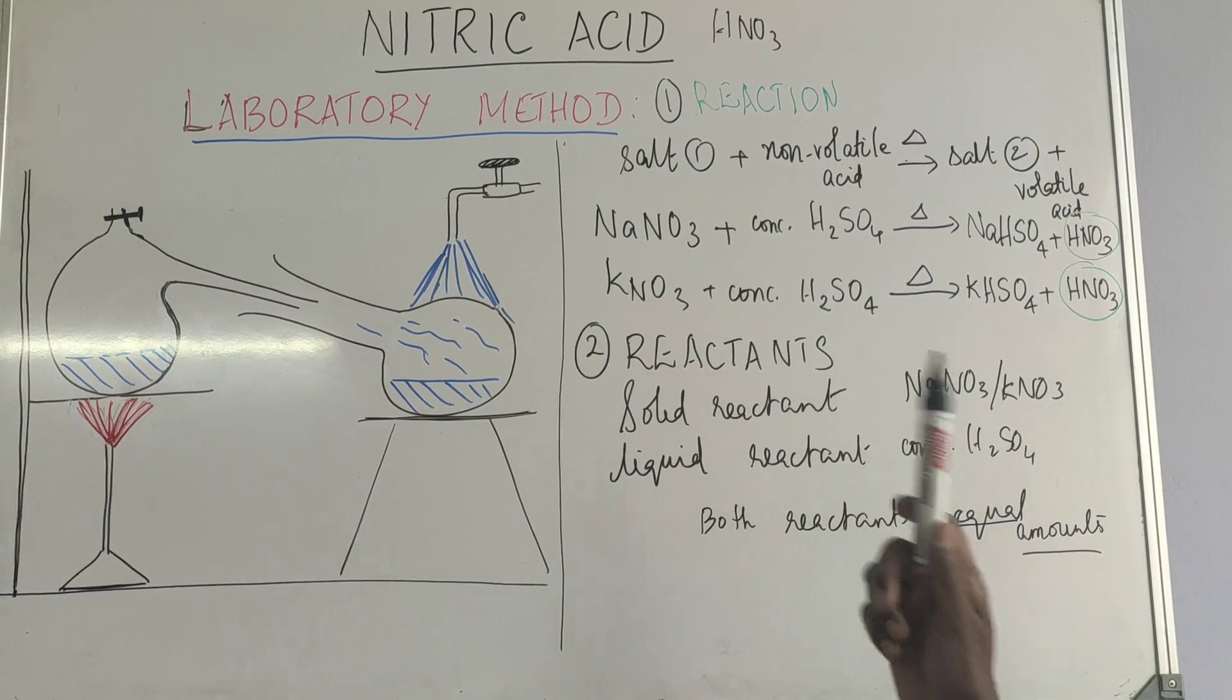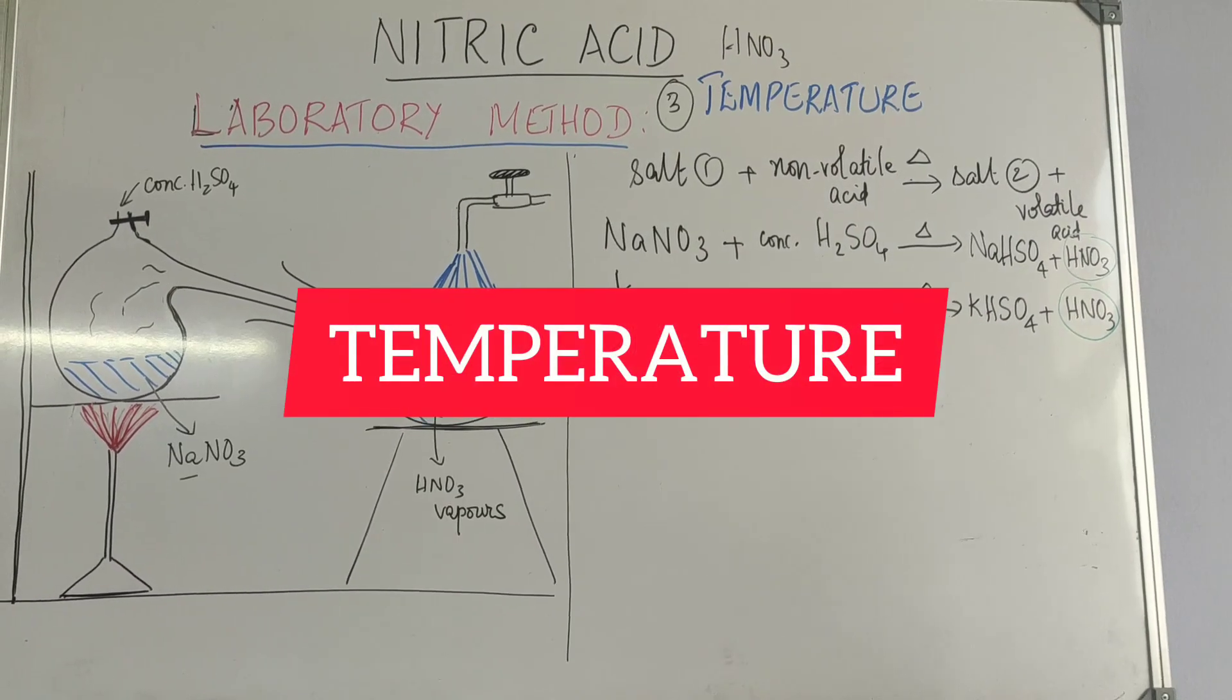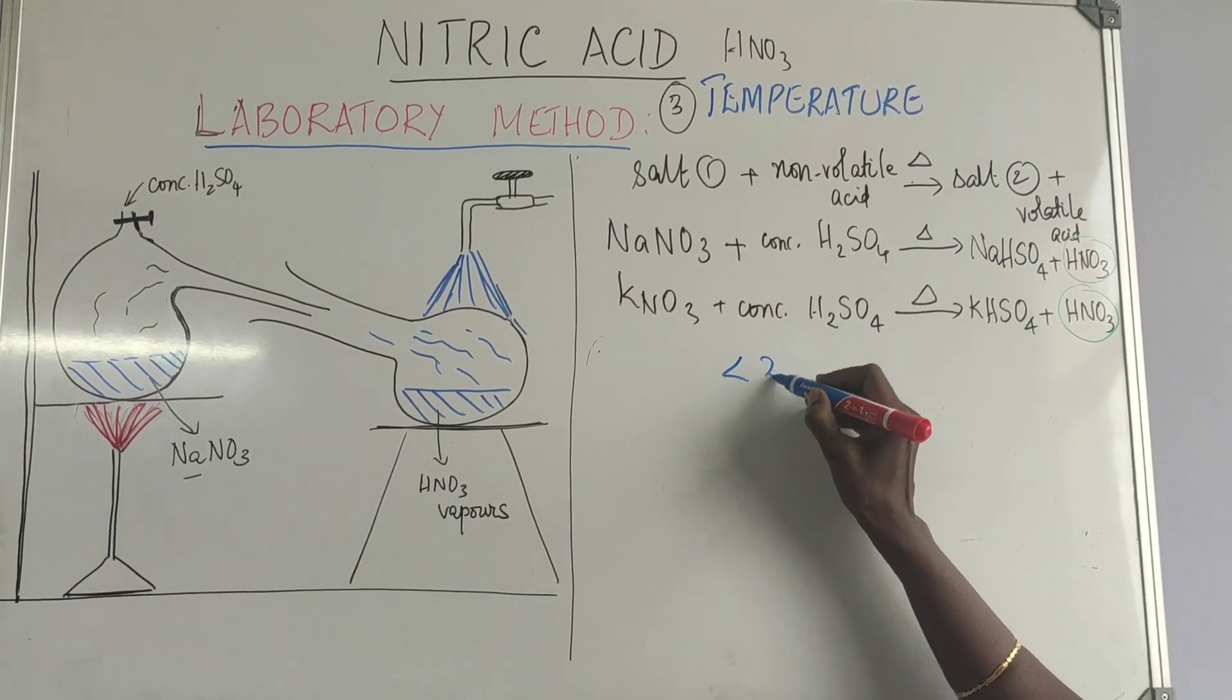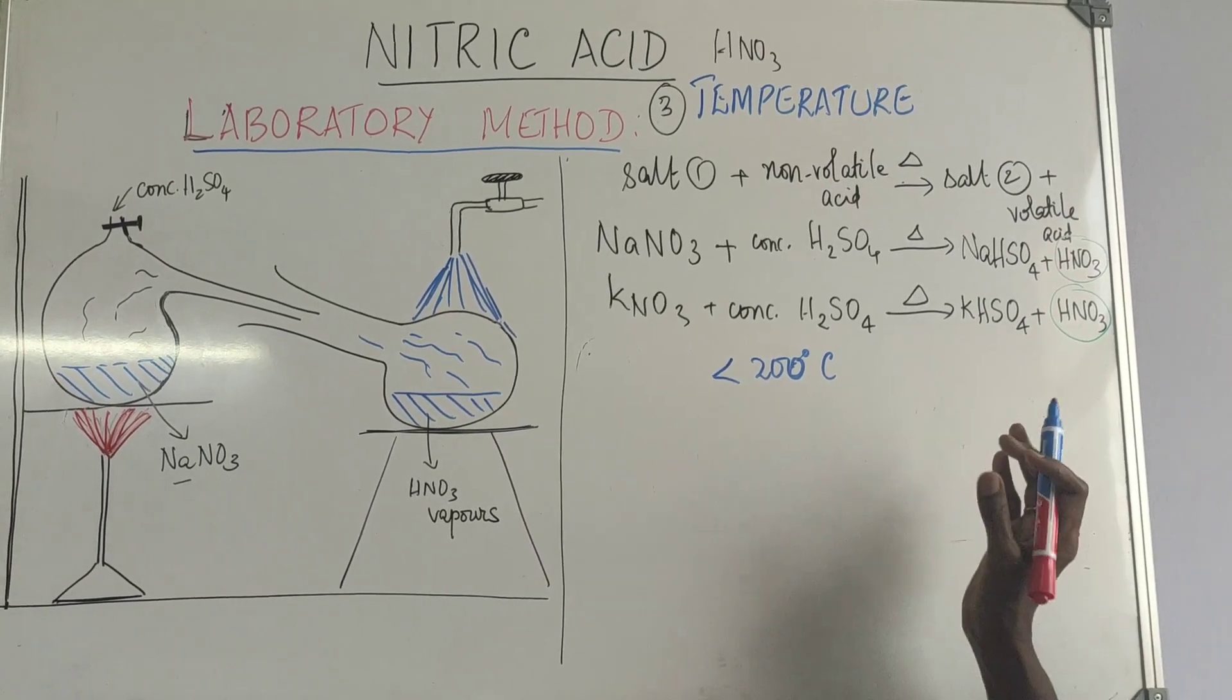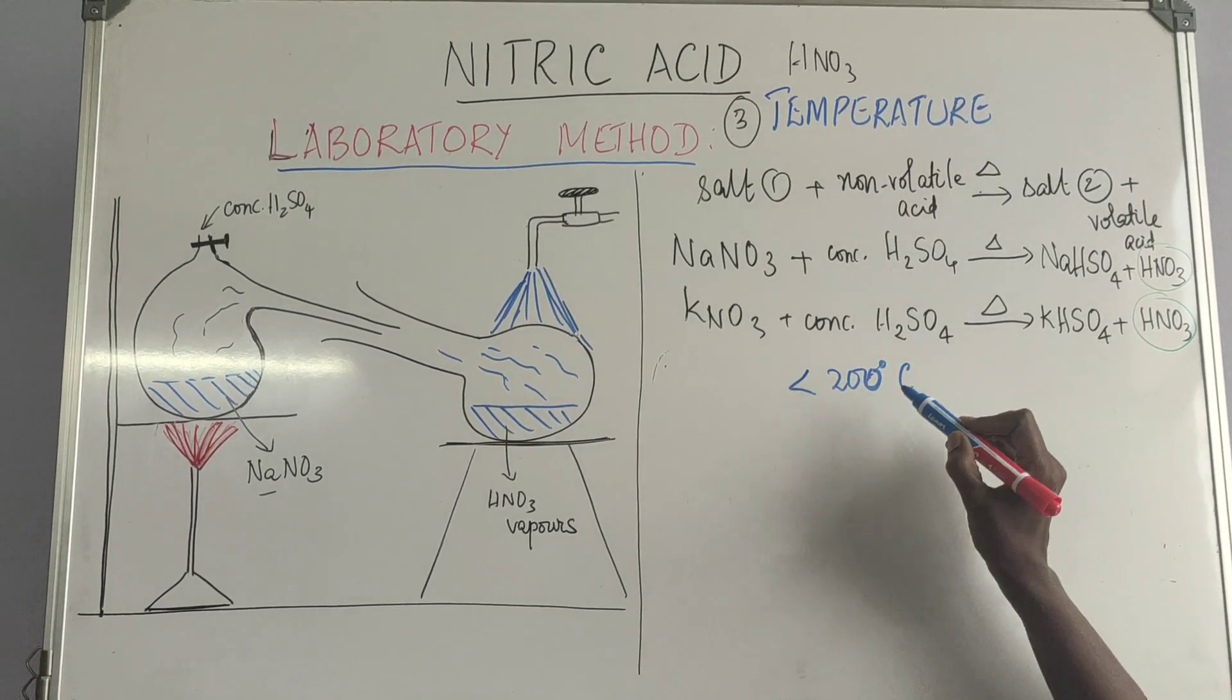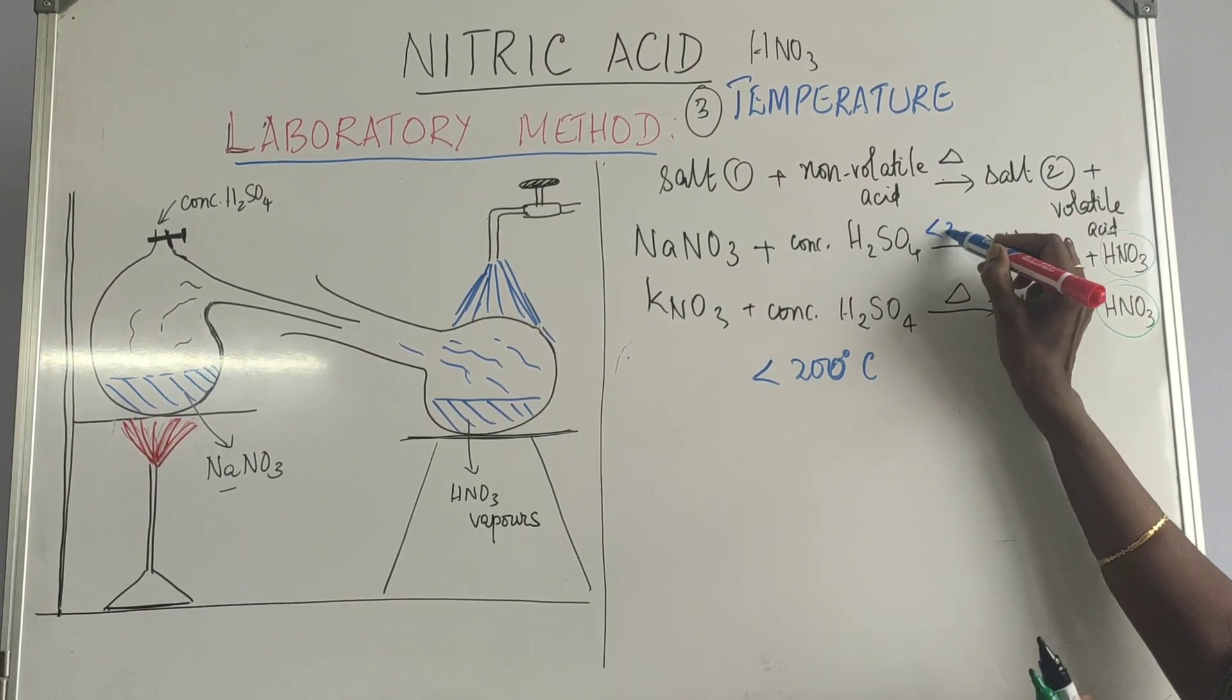Next we move on to the temperature. The temperature preferred is less than 200. Preferably 180 to 200 is the temperature that is preferred. Why is the temperature preferred less than 200? When the temperature is less than 200, these are the products that are formed.